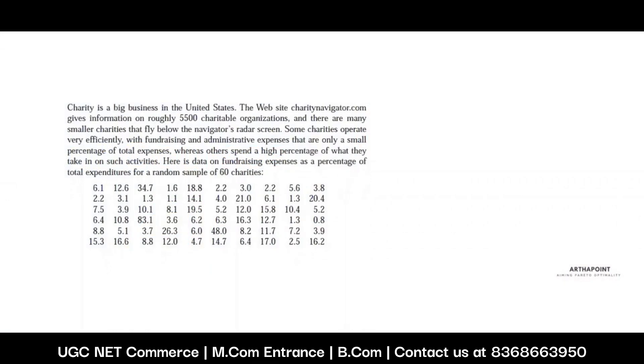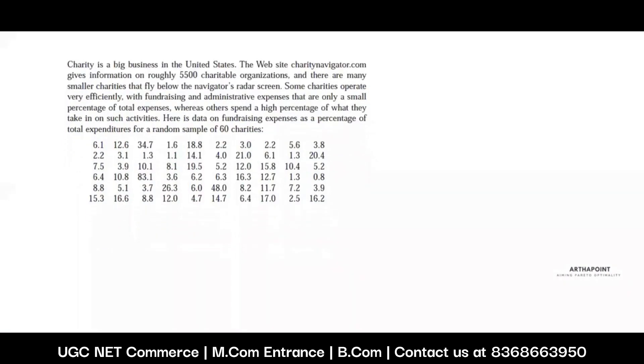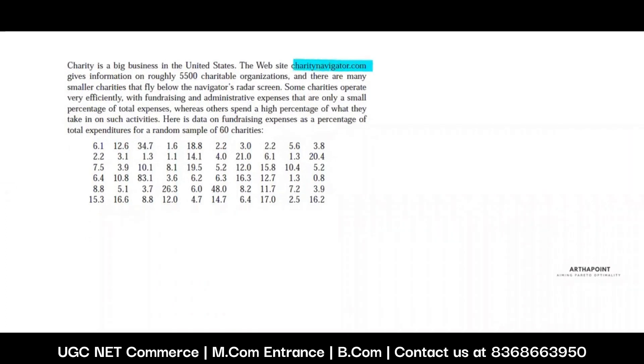To understand descriptive statistics, let's consider this question. We're talking about a website which gives information about charitable organizations. There are many small charities that appear. Some charities operate very efficiently with fundraising and administrative expenses, whereas others spend a high percentage on such activities. This data is on fundraising expenses as a percentage of total expenses - how much money is required to raise funds divided by the total expenditure undertaken for 60 charities.